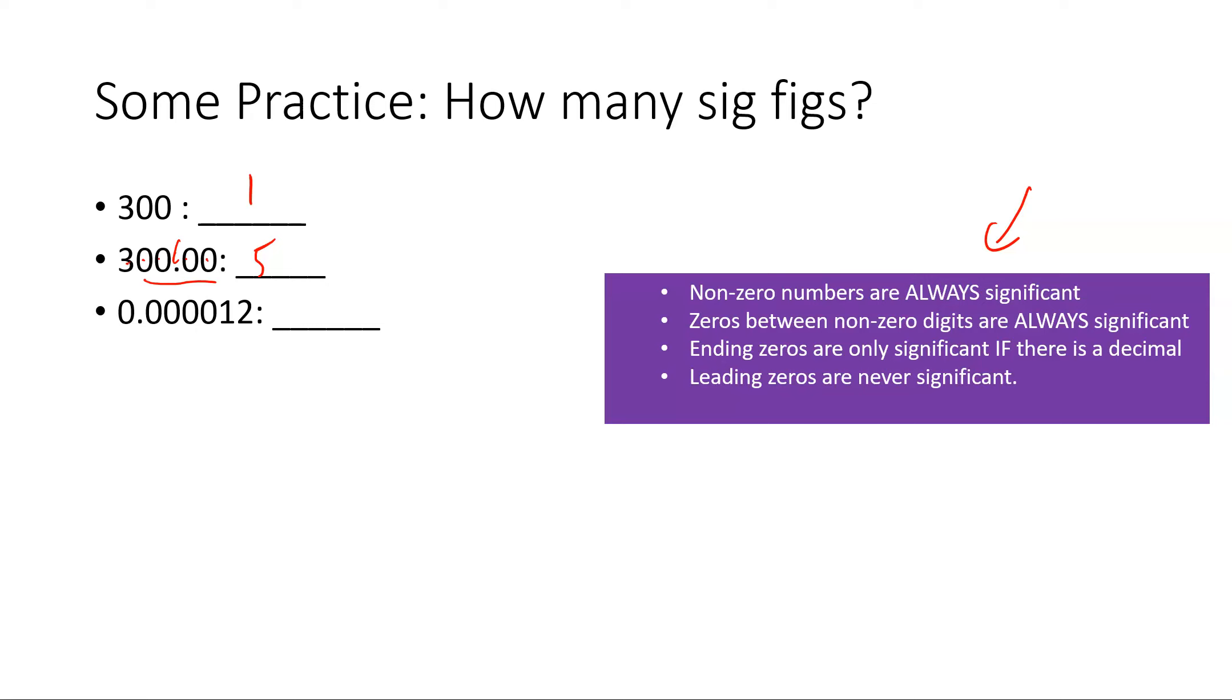Leading zero is not significant, so we just have the one and the two, so that makes two sig figs. Leading zero is not significant. The one and the four are. This is an ending zero with a decimal, so that would make three sig figs.